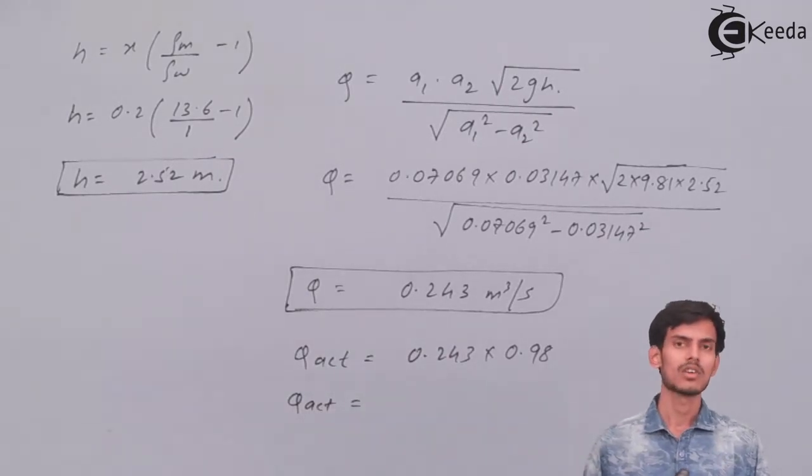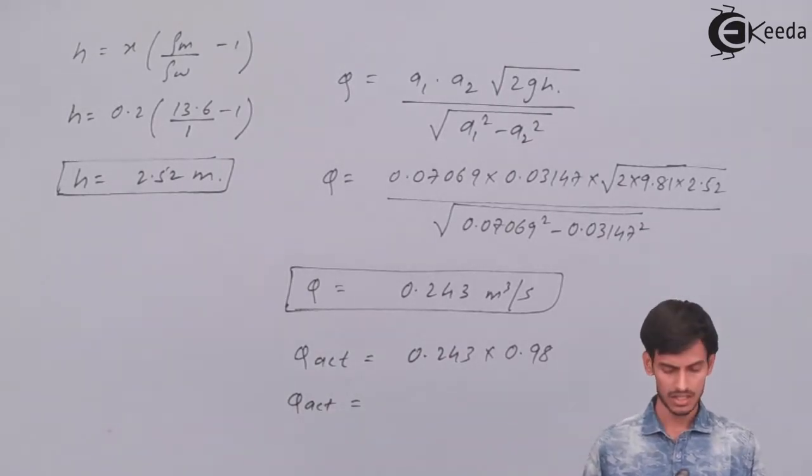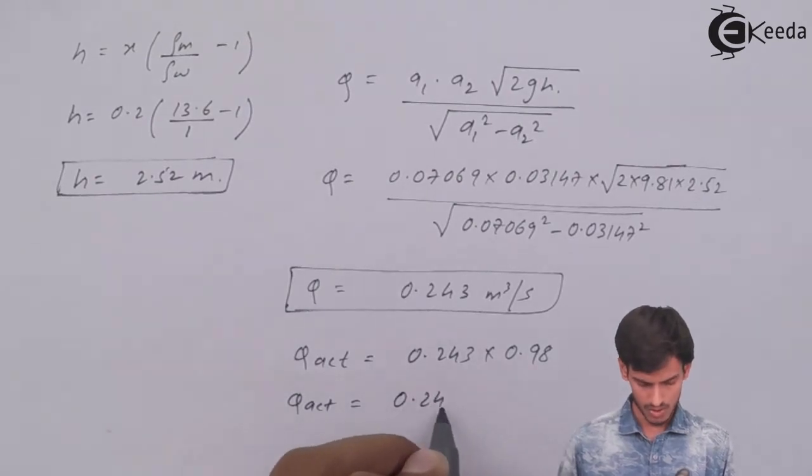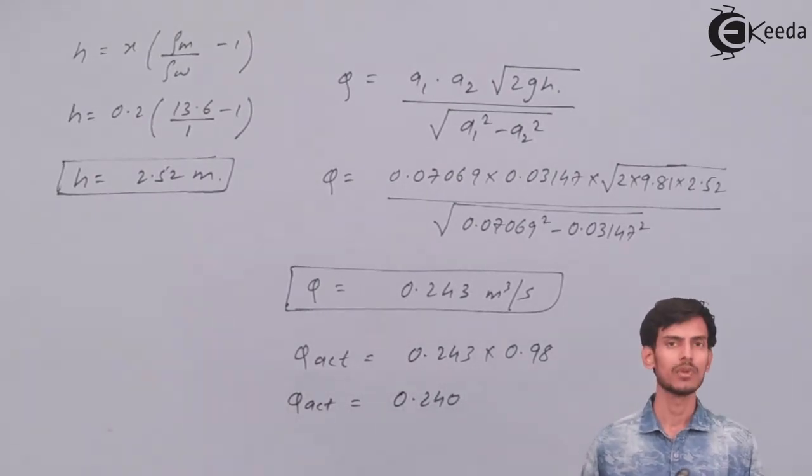So after you multiply the theoretical value with the value of CD, you get the actual discharge, which is 0.240 meter cube per second. So that was all about this question.